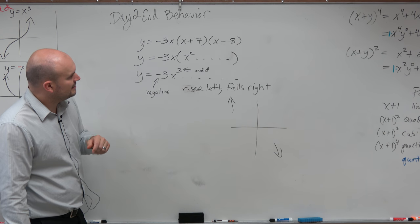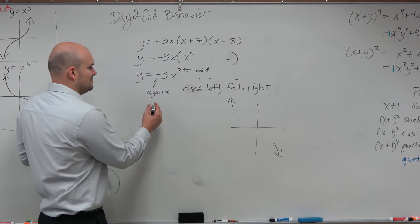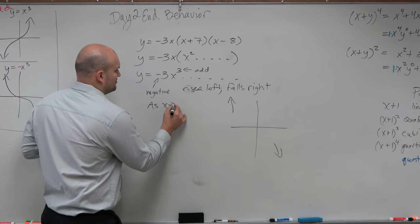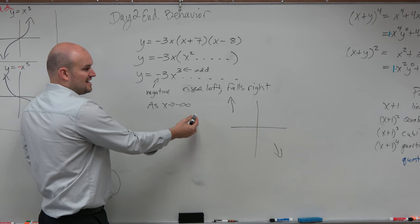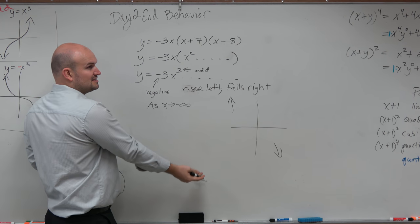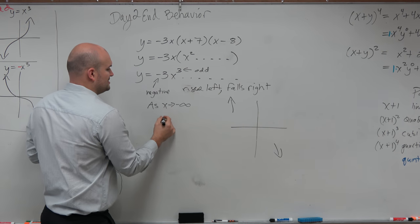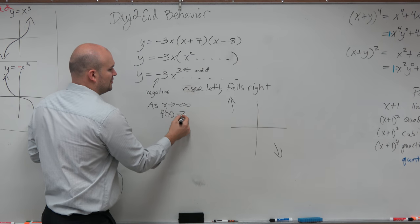So let's do it by writing it out. We could say as x approaches negative infinity. So as x approaches negative infinity means as the graph is going to the left, you can see that it's going up. So we'd say f of x approaches infinity.